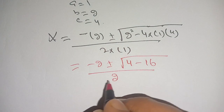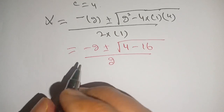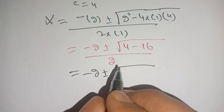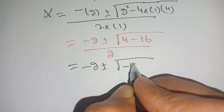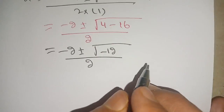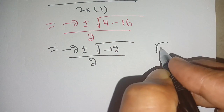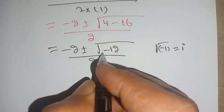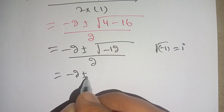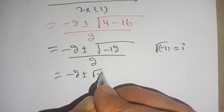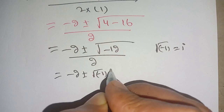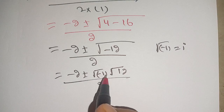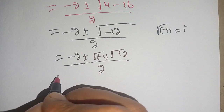We get minus 2 plus or minus square root of negative 12, divided by 2. We know that the square root of minus 1 is equal to iota. So we can write this as minus 2 plus or minus square root of (minus 1) times square root of 12, divided by 2.